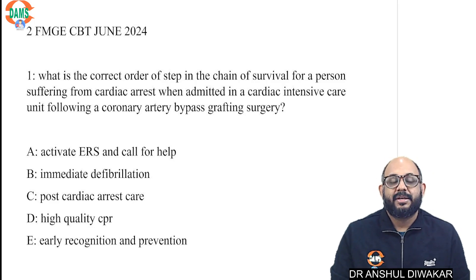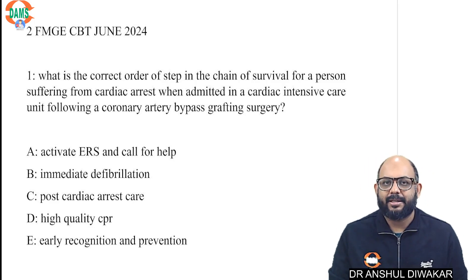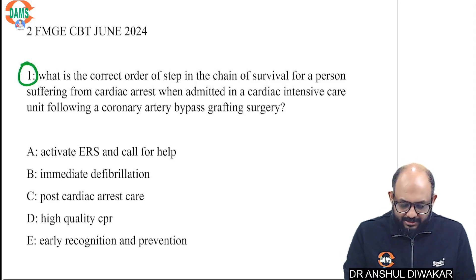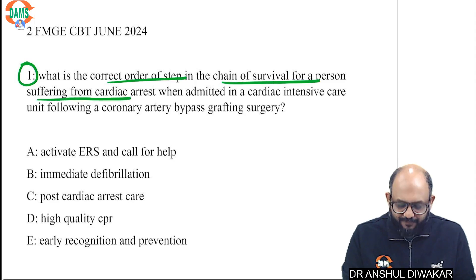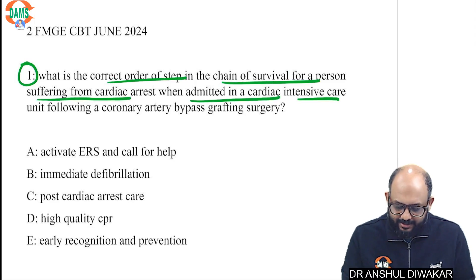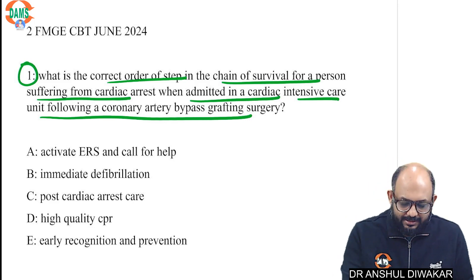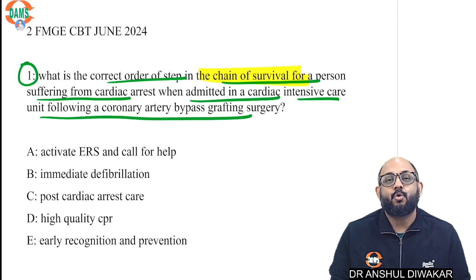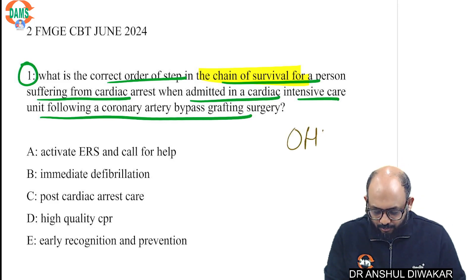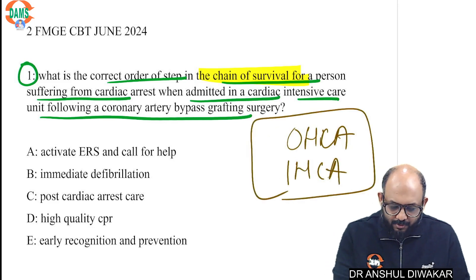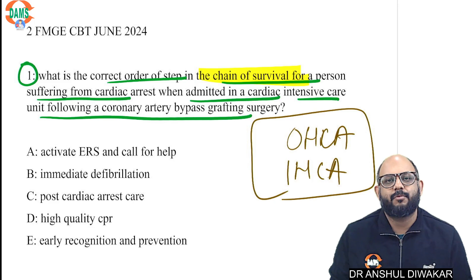Let's start with the discussion of anesthesia questions from your CBT. Question number one: what is the correct order of steps in the chain of survival for a person suffering from cardiac arrest when admitted in a cardiac intensive care unit following coronary artery bypass grafting? This is asking for the chain of survival. There are two scenarios in CPR — one is out-of-hospital cardiac arrest (OHCA) and one is in-hospital cardiac arrest (IHCA).